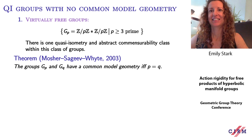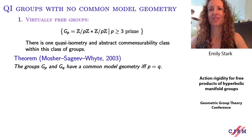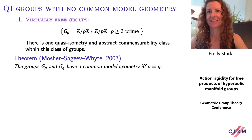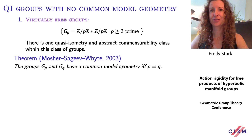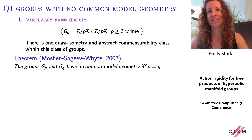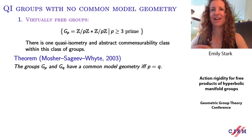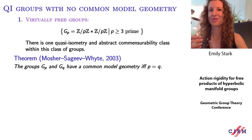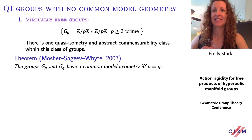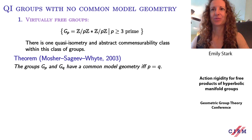Mosher-Sageev-Whyte in 2003 proved that the groups G_p and G_q have a common model geometry if and only if the prime p equals the prime q, i.e., if and only if the groups G_p and G_q are isomorphic. These were the first examples of groups that are quasi-isometric but don't have a common model geometry, and also the first examples of abstractly commensurable groups without a common model geometry. Note that this obstruction disappears after passing to finite index subgroups — these groups virtually have a common model geometry because any two free groups have one.